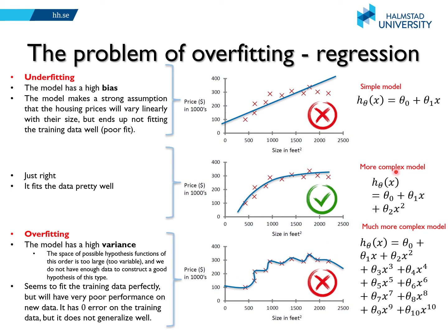To summarize: for this dataset, the polynomial of degree 2 is an example of good model complexity. If the model is too simple, we talk about underfitting because it does not capture the complexity of the data. If the model is too complex, we talk about overfitting. In both cases — underfitting and overfitting — the model will have poor generalization performance when applied to new data, meaning a high generalization error or low generalization accuracy.